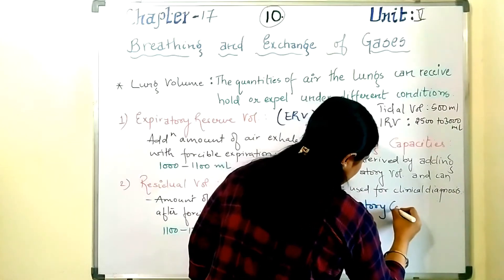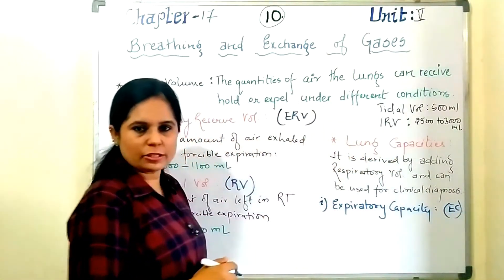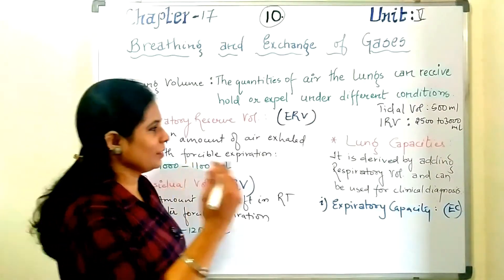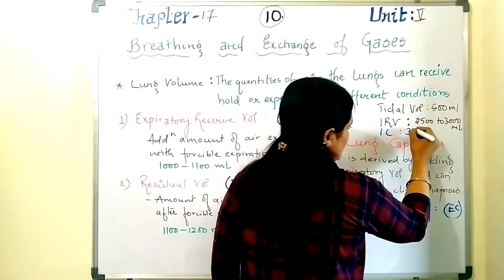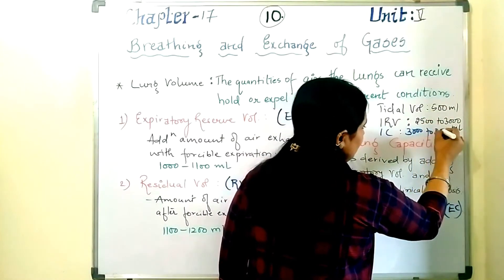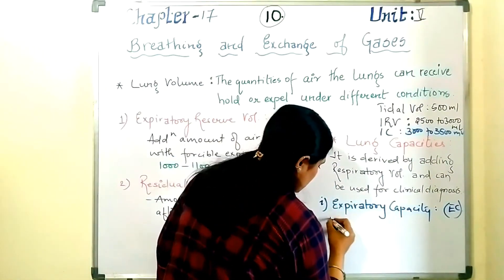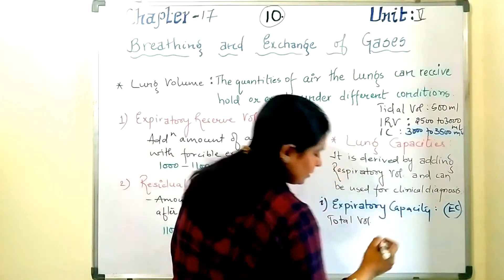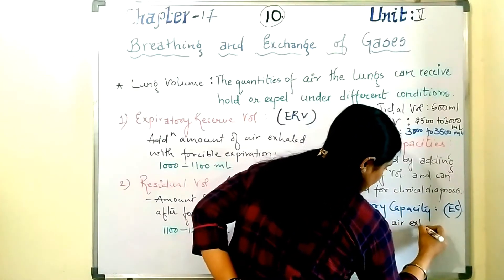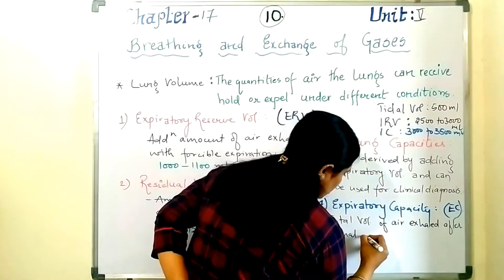The first lung capacity we will discuss is expiratory capacity (EC). As I told you in my previous video, inspiratory capacity is about 3000–3500 ml, where we add tidal volume and inspiratory reserve volume. Now, what is expiratory capacity? It is the total volume of air exhaled after normal inspiration.